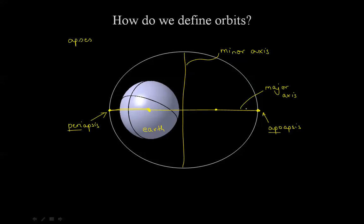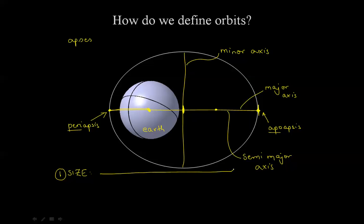If we change the size of the major axis and make it longer and longer, the orbit would drastically increase in size. And that is our first parameter: size. The size is indicated by the length of half the major axis, also known as the semi-major axis — our first parameter, denoted by the letter A.